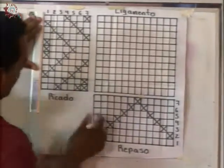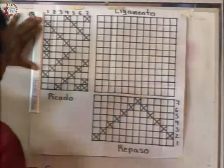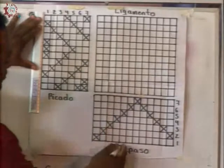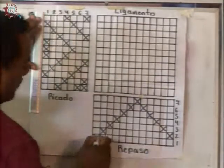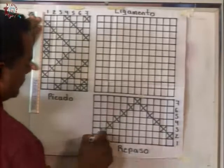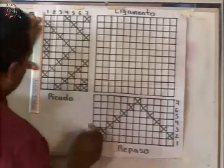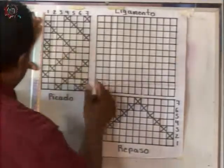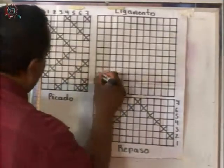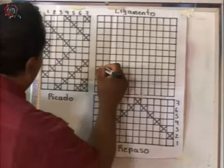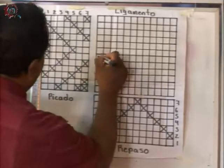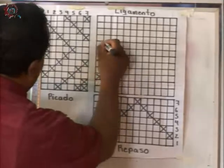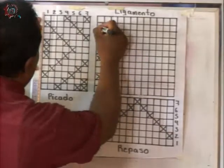Esto lo voy a repetir, pero ¿en dónde? Donde el repaso me indique que va el hilo número uno. Aquí me indica que va el uno — esta crucecita corresponde al hilo número uno. Entonces, nada más voy a copiar esto aquí: dejo dos, tomo uno, dejo dos, tomo tres, dejo dos y tomo uno.